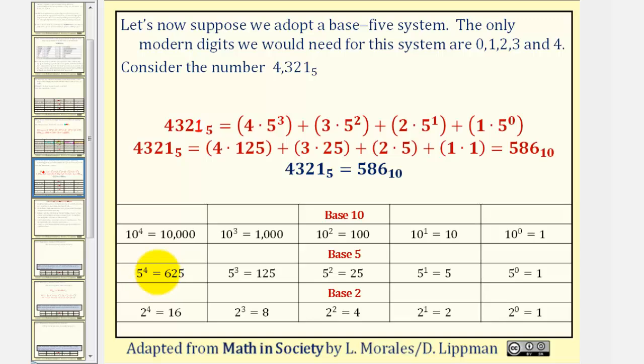So if we wanted to write this base 5 number in base 10, we can do so using each particular place value. This 4 represents 4, 5 to the thirds, or 4, 125's. This 3 represents 3, 5 to the seconds, or 3, 25's.